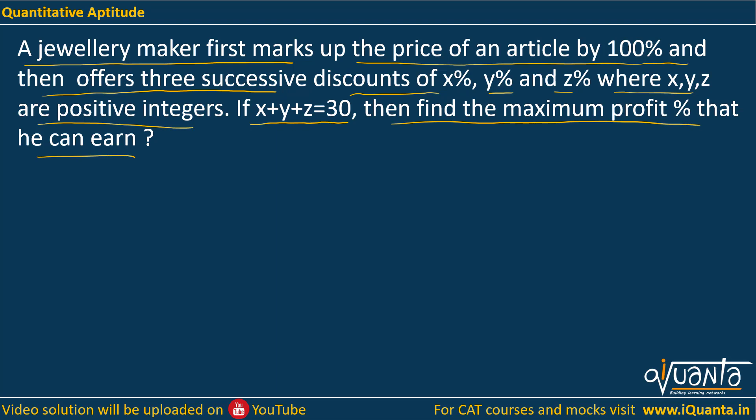Since we do not know anything about the CP, SP, or MP of these items, we'll start by assuming that CP was 100. Why did we assume the CP? Because we have to mark up the price, and mark up is always upon the cost price. Now if we mark up the CP by 100%, that means we are doubling the CP, which means the mark price would become 200 rupees.